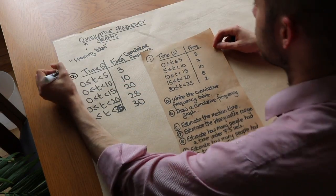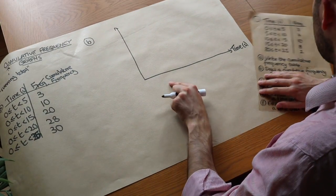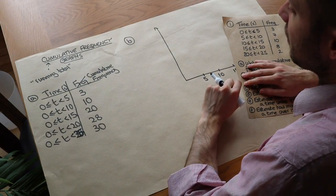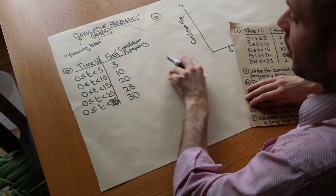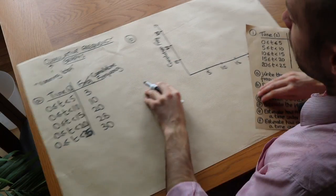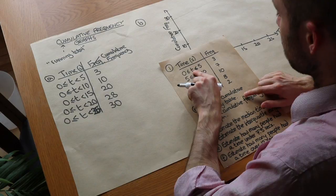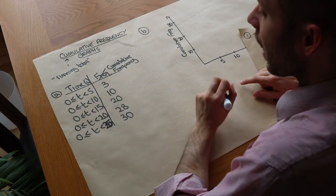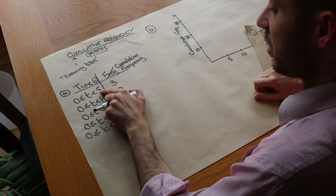Now we want to draw the cumulative frequency graph. We put time on the x-axis going up to twenty-five, and cumulative frequency on the y-axis going up to thirty. We have to plot these values. In a frequency polygon we always use the midpoint of each range, but this time we're going to use the end point and plot it with the cumulative frequency. The reason we use the end point is because we're saying there are three people with a time of up to five seconds.